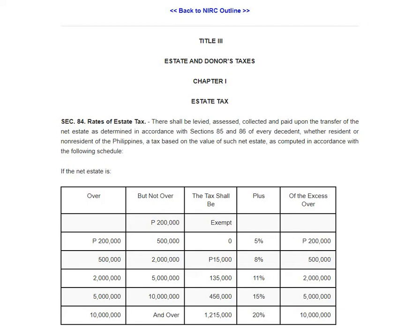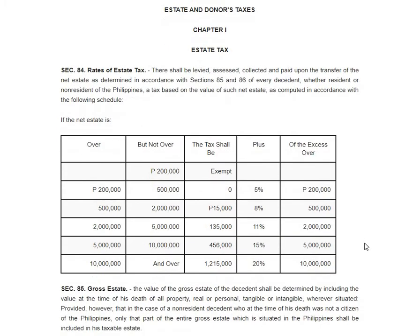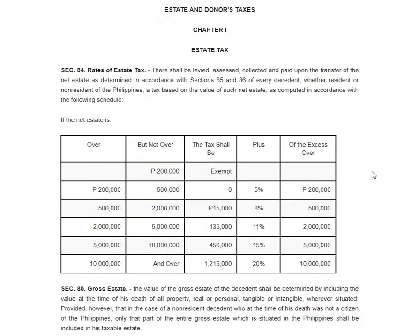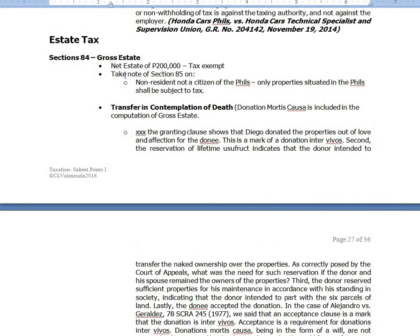Now we go to estate and donor's taxes. This is Title 3, Chapter 1. You notice this schedule here — this is an example of a scheduler tax system. The less the amount is, the less tax you will pay. For the net estate, if the net estate is not over ₱200,000, it is exempt from estate tax. To get the net estate, you need to derive it — not the gross estate. There's a different idea there, which we'll discuss later.